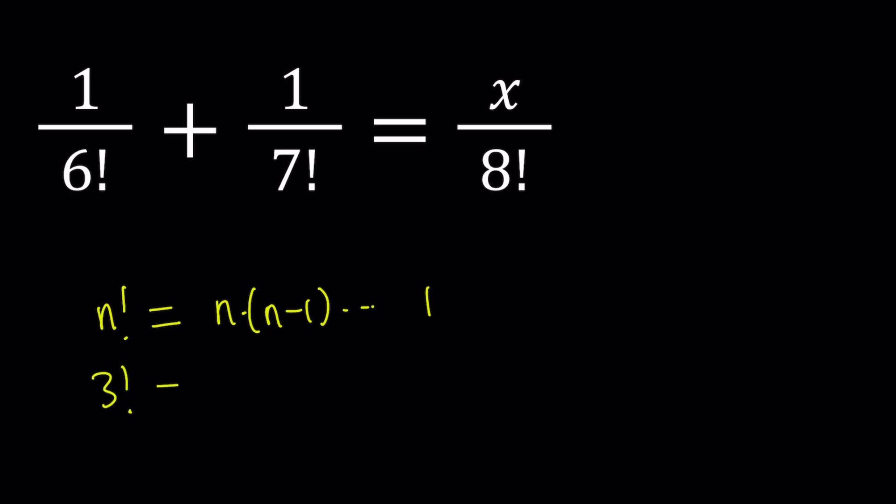So 3 factorial would be 3 times 2 times 1, and that would be 6. 1 factorial is 1. 0 factorial is 1 by definition. There's also a gamma function definition which includes the factorials of real numbers.